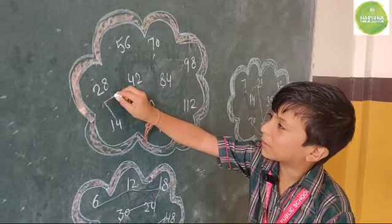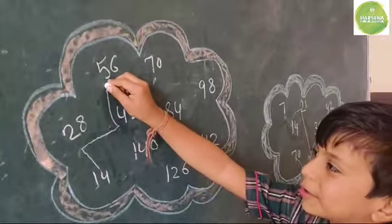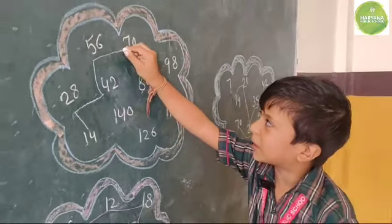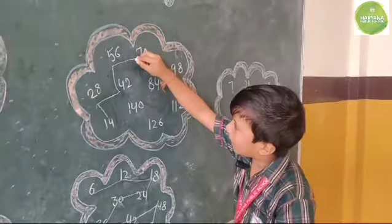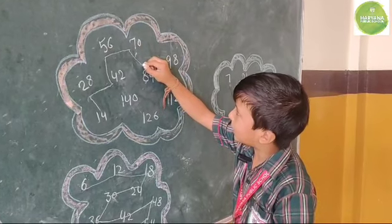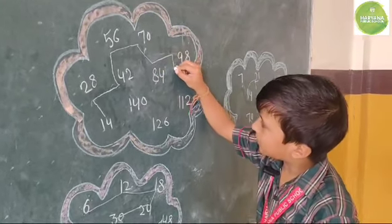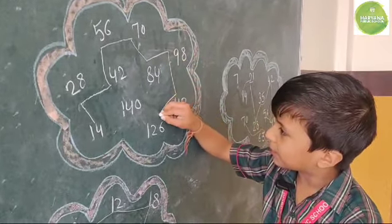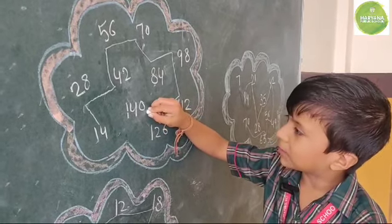14 times 1 is 14, 14 times 2 is 28, 14 times 3 is 42, 14 times 4 is 56, 14 times 5 is 70, 14 times 6 is 84, 14 times 7 is 98, 14 times 8 is 112, 14 times 9 is 126, 14 times 10 is 140.